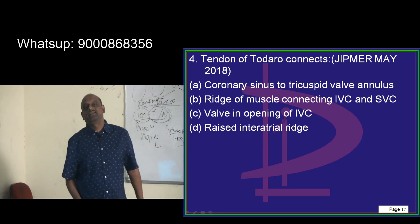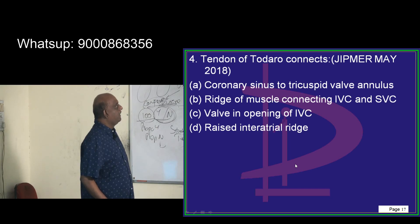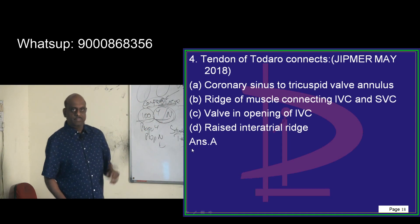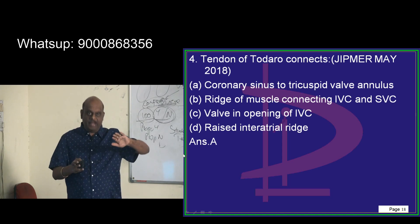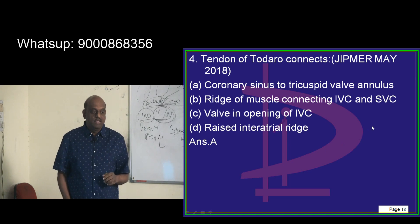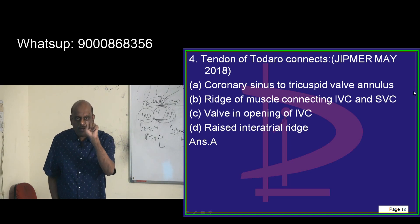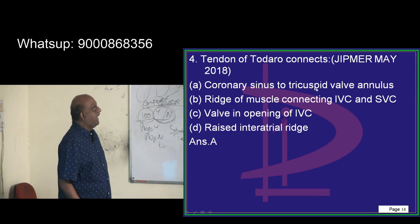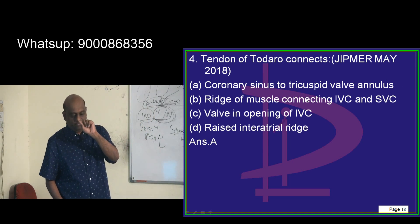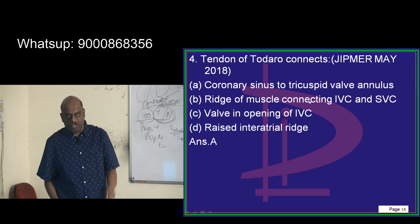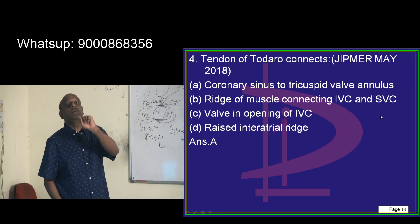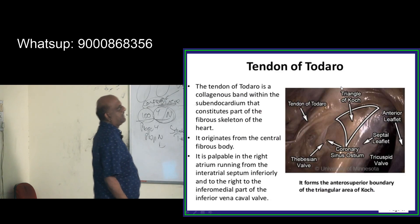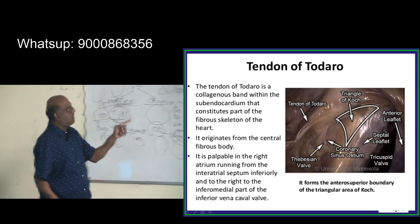What does the Tendon of Todaro connect? In the right atrium, if you take the cross-section, you can see the opening of the coronary sinus and the tricuspid valve annulus — and the Tendon of Todaro is the one which connects them, forming what is called the Triangle of Koch.